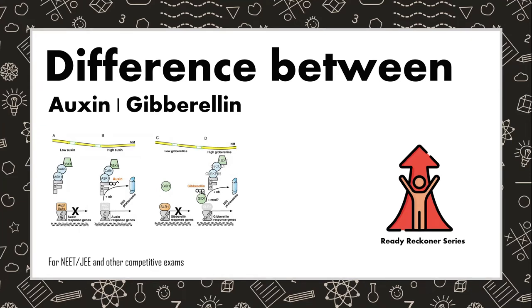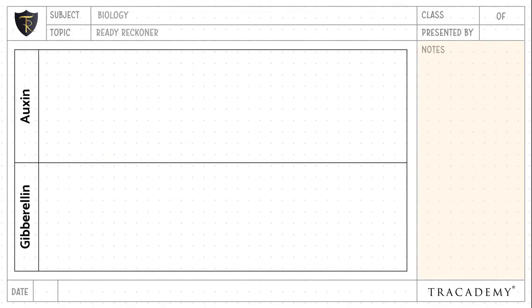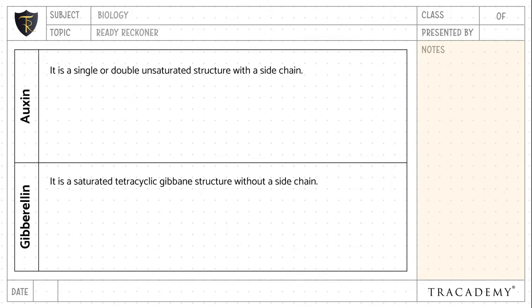In this video, let's understand the difference between auxin and gibberellin. Auxin is a single or double unsaturated structure with a side chain, whereas gibberellin is a saturated tetracyclic gibane structure without a side chain. Auxin is found in higher plants, whereas gibberellin is found both in higher plants as well as in fungi.